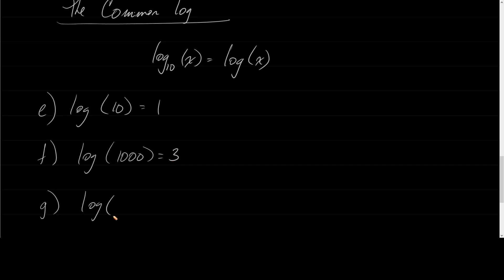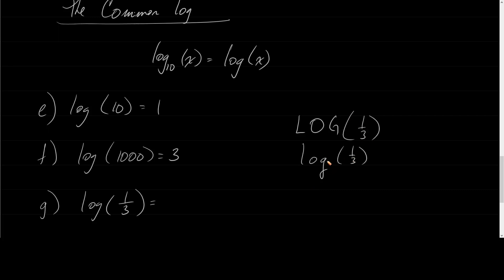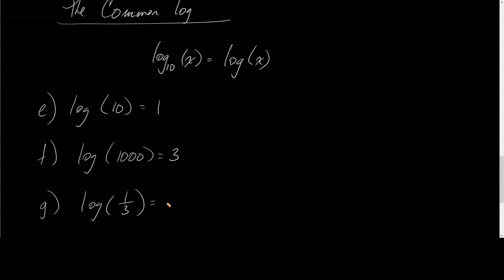But what if it wasn't such a nice number, like log of one third? Here is where your calculator comes into play. A scientific calculator has a button that says log. So you would enter log of one third, and it turns out that when you plug it into the calculator, it gives approximately negative 0.4771213.